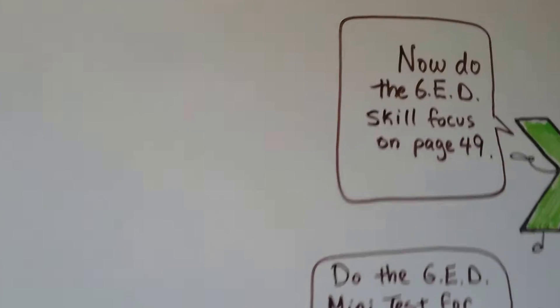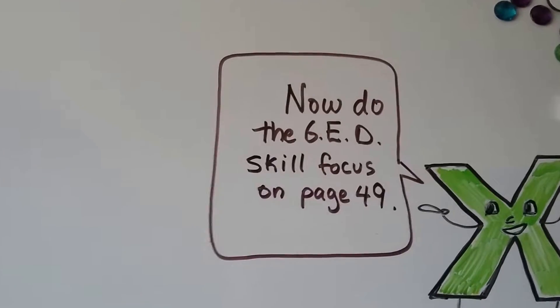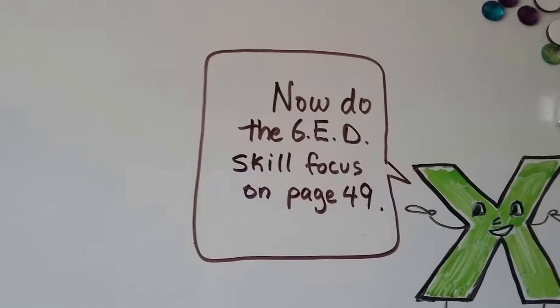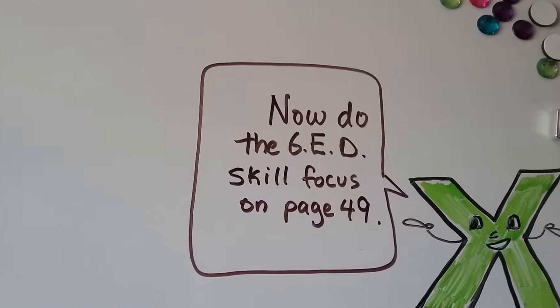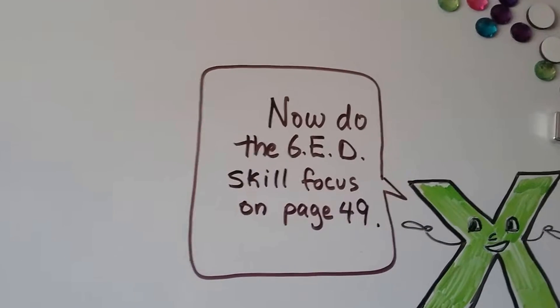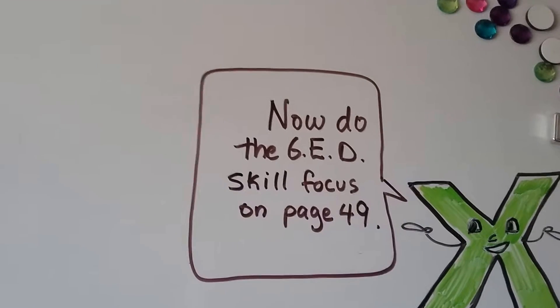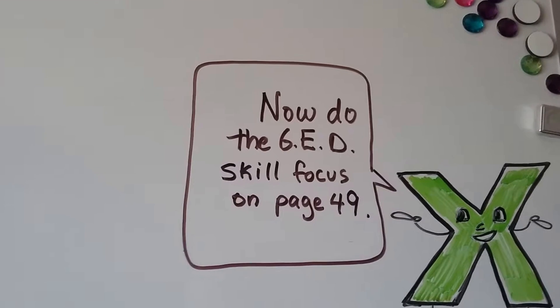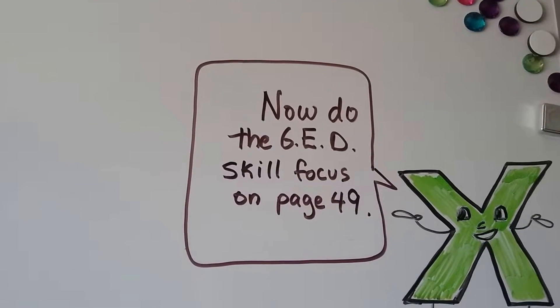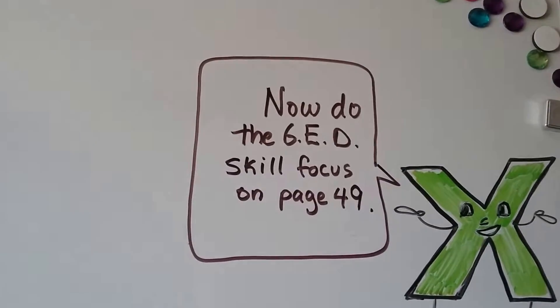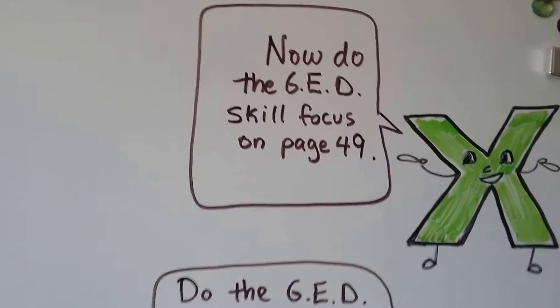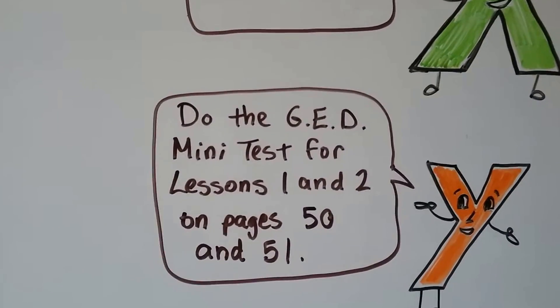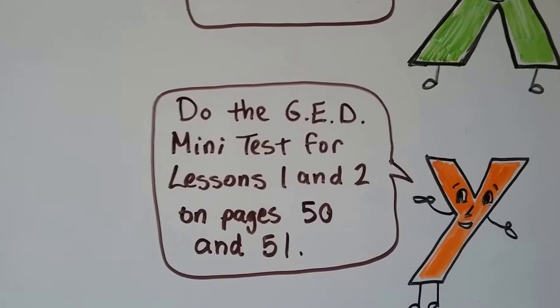So right now, you should be ready to do the GED skill focus on page 49. If you do the skill focus, and you're having trouble, and you get some of them wrong, because there are answers in the back of the book, or you're reading the problem, and you're like, I don't know how to do this. This is crazy. Well, then you need to go back in this playlist and figure out what lessons you skipped or missed or didn't get. And there's links in all the descriptions of the videos for easier videos to help you to explain it in different ways. Once you finish the skill focus on page 49, you're ready to do the GED mini test for lessons 1 and 2 on pages 50 and 51.